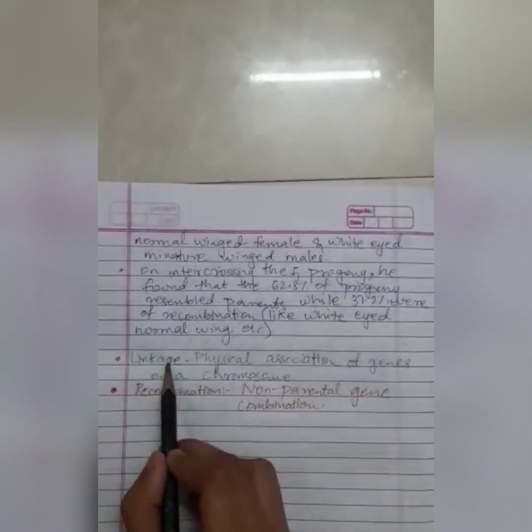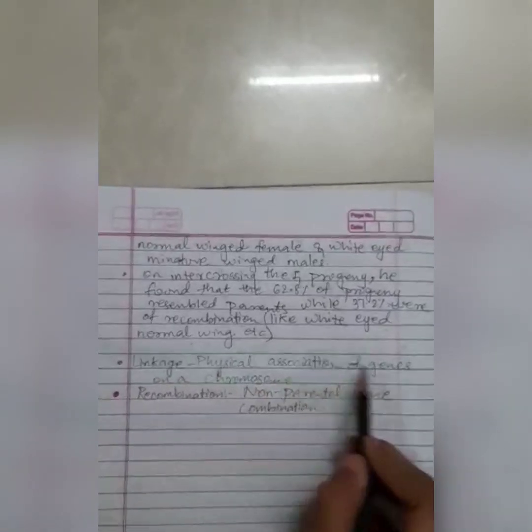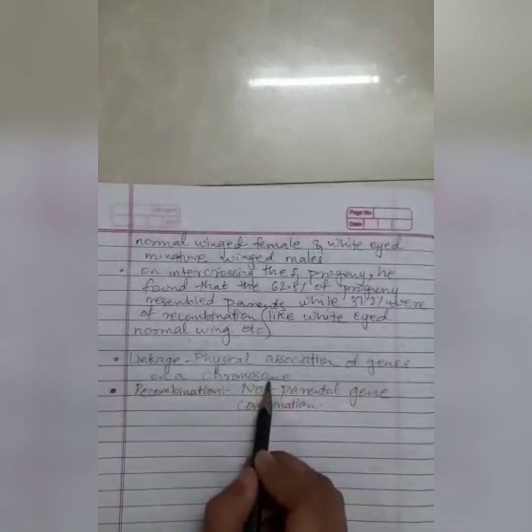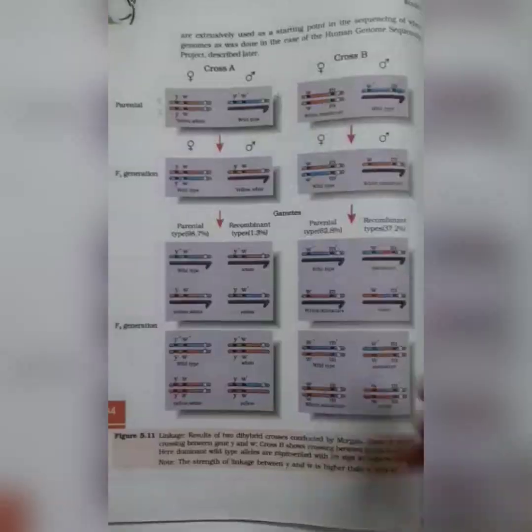Here the linkage. What is linkage? It is physical association of genes on a chromosome. And what is recombination? Non-parental gene combination.